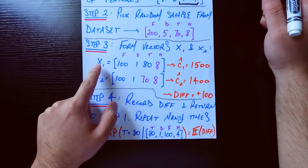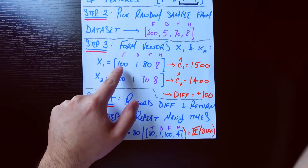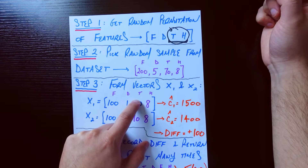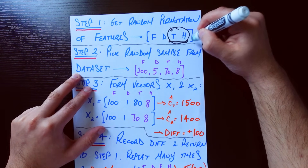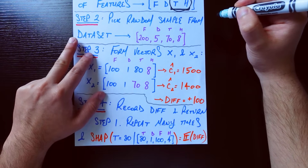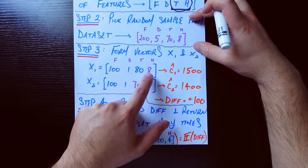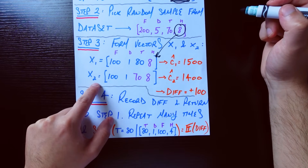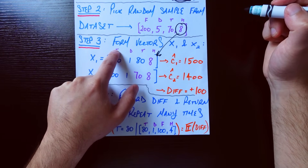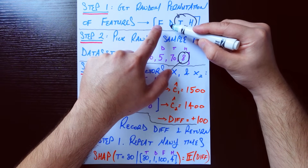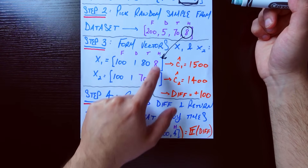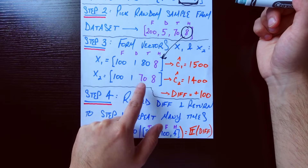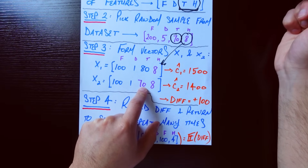The first Frankenstein vector, x1, has all the same values from our original sample — those are the blue values. We look at which features are in the bracket: H as well as T. Since T is the feature we care about, we leave that the same. So for x1, T stays as 80 and we change H to the randomly chosen value of 8. For x2, we keep F and D the same (100 and 1, from our original sample) since they were not in the bracket. But we change H to 8, just like for x1 — and crucially, we also change temperature to the randomly chosen value of 70.